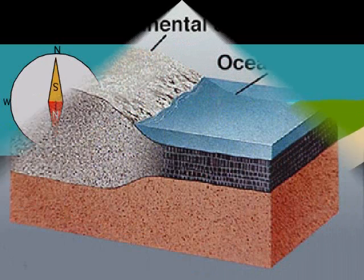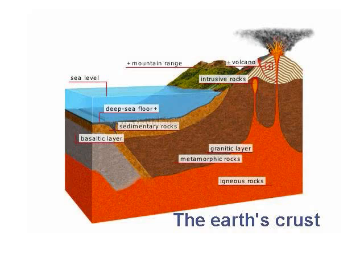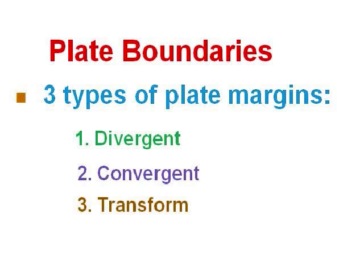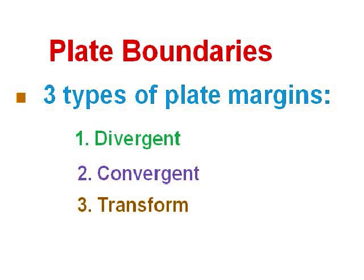Now let's talk about the Earth's surface — its crust. We will look at how the crust is ever changing and dynamic. We will describe the theory of how new crust is made and old crust is destroyed. We have identified three types of plate movement at the margins, which is another word for edge or boundary. The three types of plate movements are divergent, convergent, and transform.